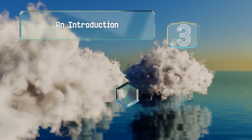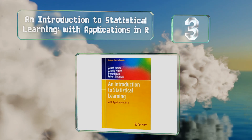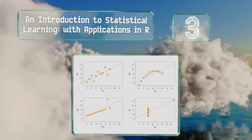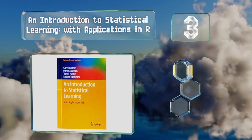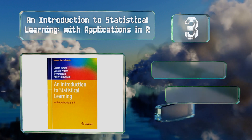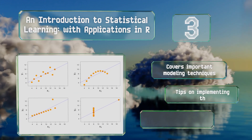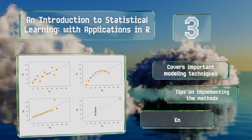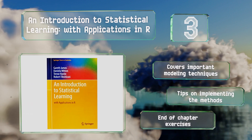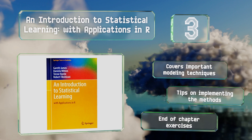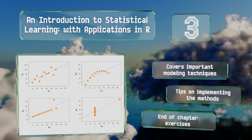Nearing the top of our list at number 3, An Introduction to Statistical Learning with Applications in R is a good choice for those in a range of different fields. It explains how to make sense of large and complicated data sets, so you can base your conclusions on accurate information. It covers important modeling techniques and features tips on implementing the methods and end-of-chapter exercises.